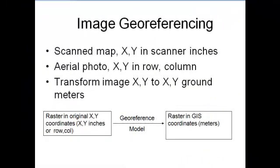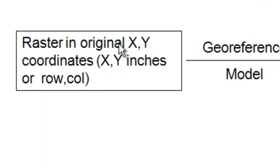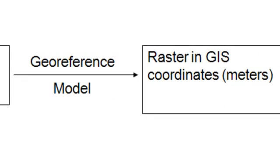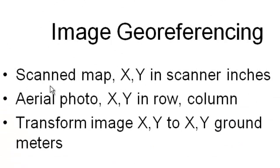This week I'll teach you about image geo-referencing using ArcGIS. The basic goal is you'll have a raster in some non-map coordinate system — it could be scanner inches or, if it's an aerial photograph, rows and columns. We're going to use a geo-referencing model to transform that raster from basic XY coordinates into XY planar GIS coordinates.